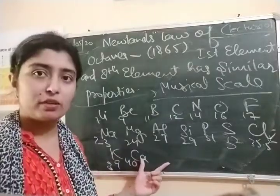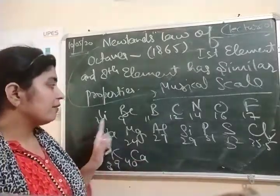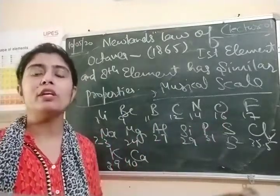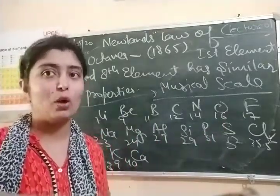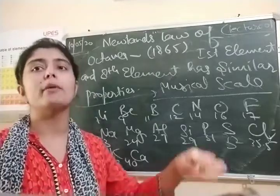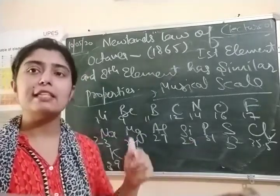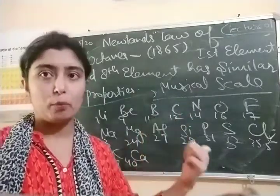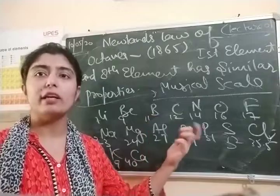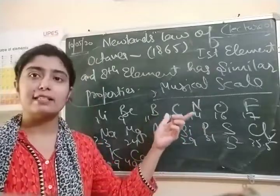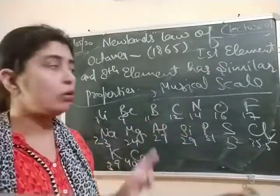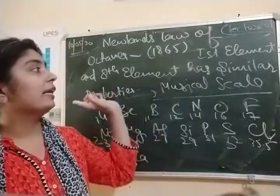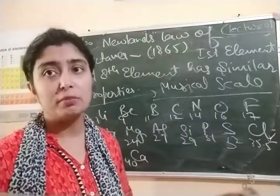Also, one more thing can be observed in this table: the atomic mass is continuously increasing - 7, 9, 11, 12. So he arranged his periodic table on the basis of increasing atomic mass. The periodic table was arranged on the basis of increasing atomic mass, and the first and eighth elements have similar properties - this is the concept of Newlands.